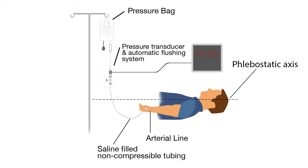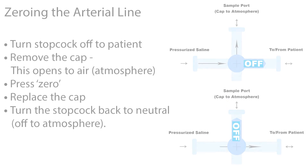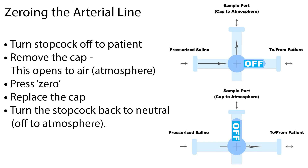Place the transducer at the level of the right atrium, called the phlebostatic axis. Turn the stopcock off to the patient and remove the cap — this opens to air or atmosphere. Press zero to set the atmospheric pressure to a zero reference point, then replace the cap and turn the stopcock back to neutral, off to the atmosphere.